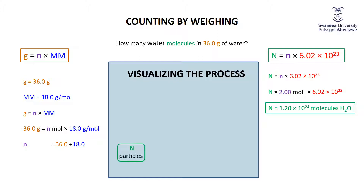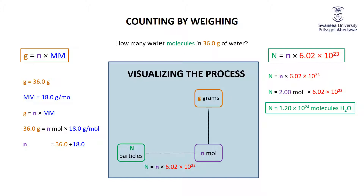To put it visually: we have a box for particles, a box for moles, and a box for grams. We relate particles to moles using N = n × 6.02×10²³, and we relate moles to grams using g = n × MM. So we took 36 grams, converted to moles, then converted to particles. This is the start of a roadmap we'll build up — relating all kinds of quantities needed in chemistry. As a colleague of mine used to say: all roads lead to moles. The mole is a very simple concept — it is 6.02×10²³.